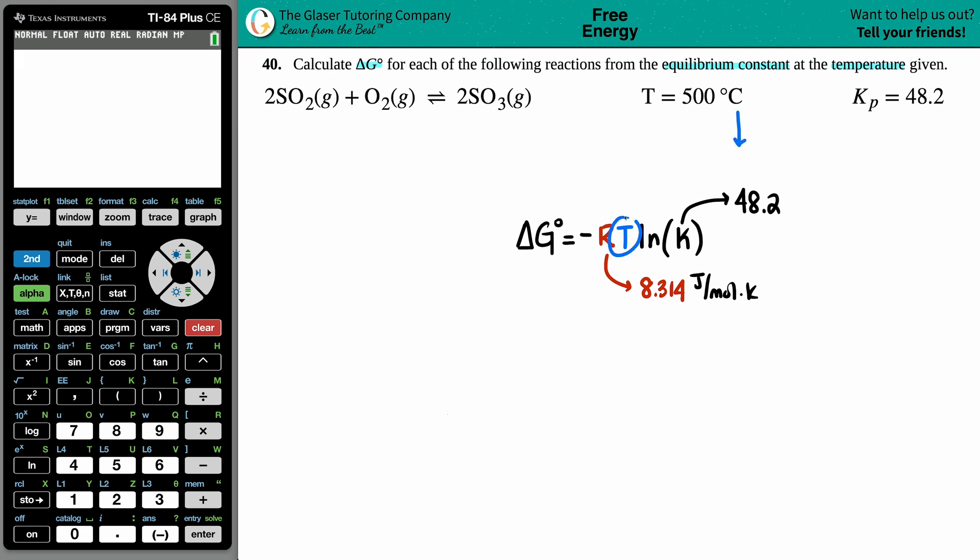First thing I'm going to do is convert that Celsius into Kelvin. Celsius to Kelvin is plus 273, or more specifically plus 273.15. So 500 plus 273.15 equals 773.15 Kelvin.